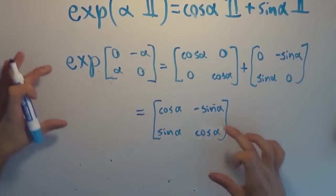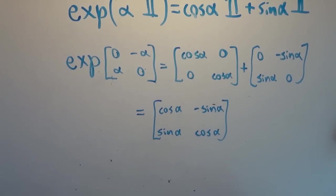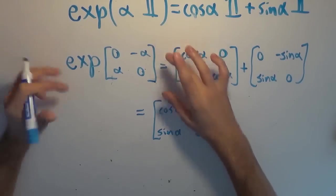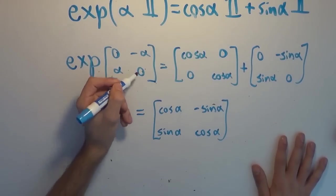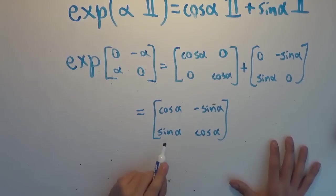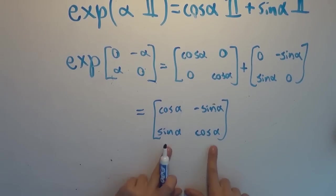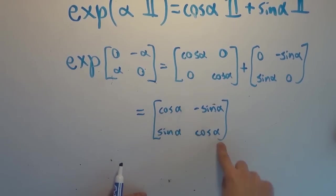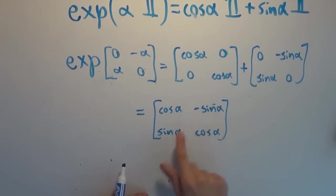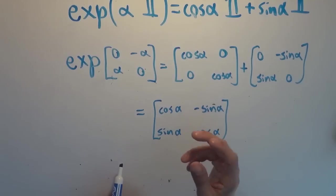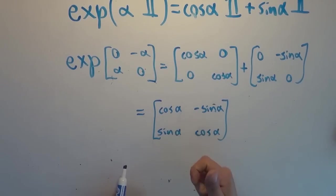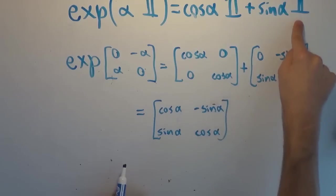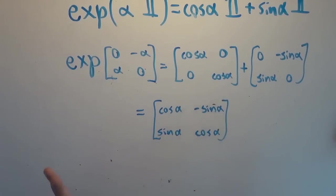So this is Euler's formula written in matrix form: EXP([0, -alpha; alpha, 0]) = [cos α, -sin α; sin α, cos α]. This still holds the form of a complex number matrix — the main diagonal has equal terms, and the off-diagonal entries are negatives of each other. We stick with the convention from this series where the upper-right entry is negative and the lower-left is positive.